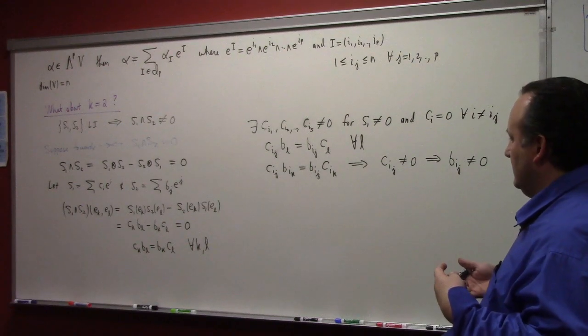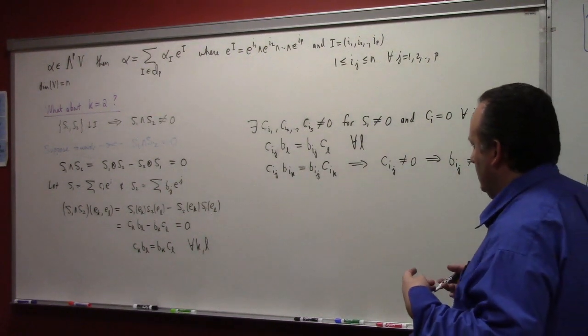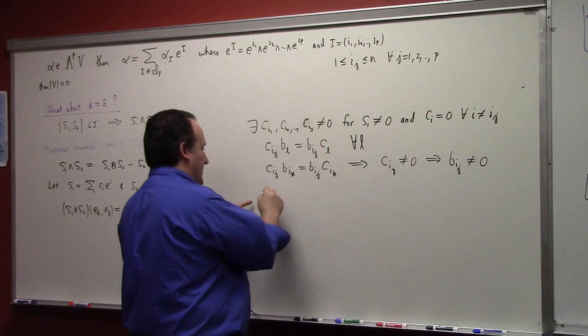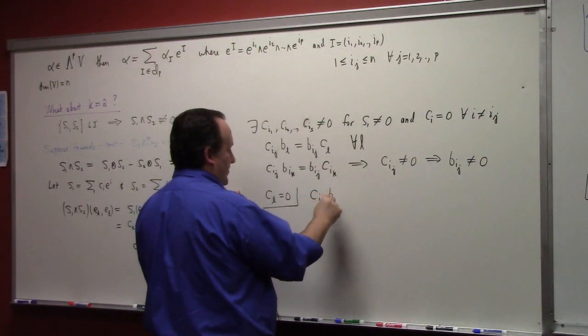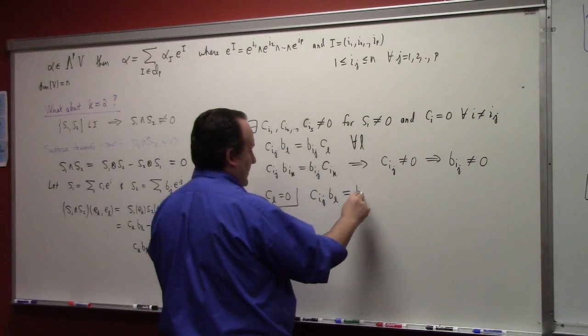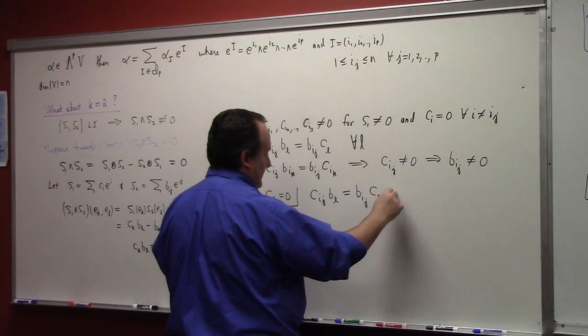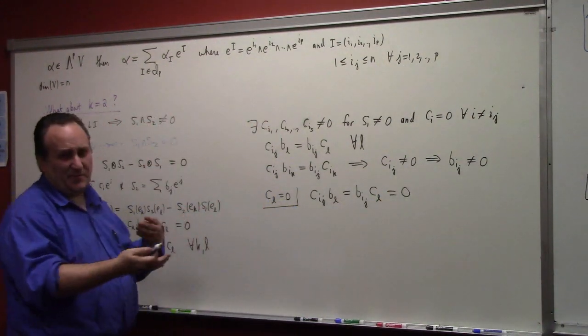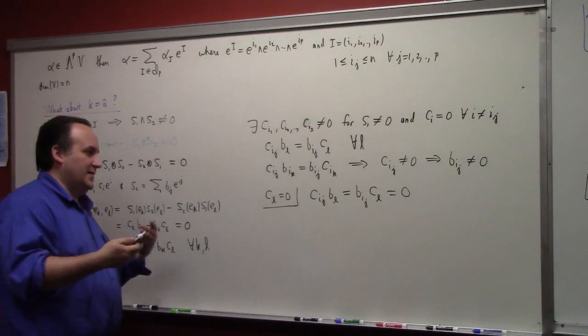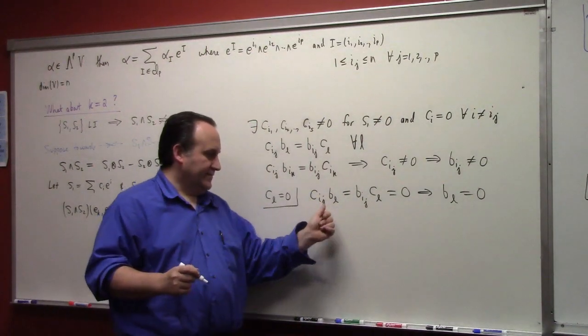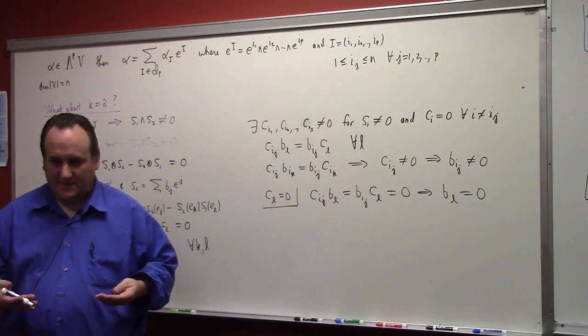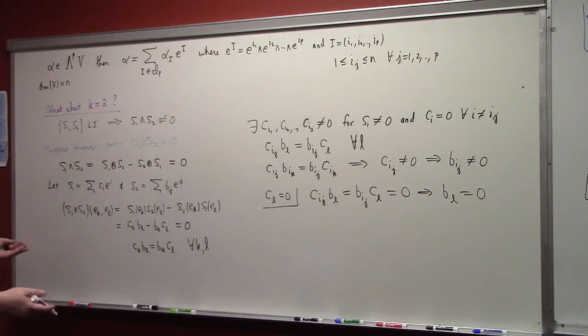But on the flip side of things, if you have Cl equals to zero, right, then you've got Cij B sub L equal to Bij Cl. Now this is equal to zero. So that implies that the B sub L is also equal to zero. Since that's nonzero, that has to be zero. So what does all this mean? This means that these two dual vectors, they have to be nonzero in the same components.